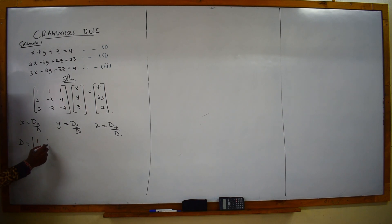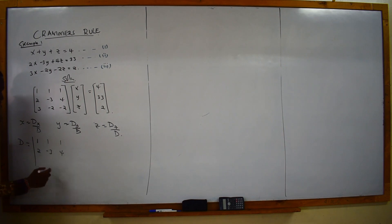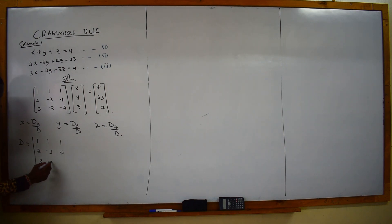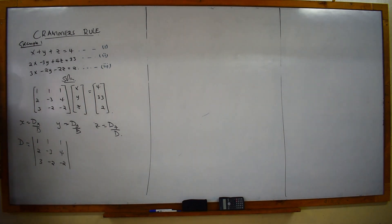So the matrix is: 1, 1, and 1 in the first row; 2, negative 3, and 4 in the second row; then 3, negative 2, and negative 2 in the third row. So we have that matrix there.